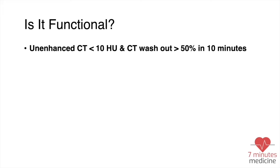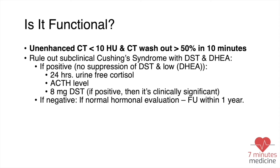That answers the first question. The second question is: is it functional? If the mass is more likely to be adenoma — less than 10 Hounsfield units and washout more than 50% — then we have to rule out subclinical Cushing syndrome with a low-dose dexamethasone suppression test and DHEA. If the test is positive for subclinical Cushing syndrome — Cushing syndrome without symptoms — there should be no suppression on the dexamethasone suppression test and no DHEA suppression.